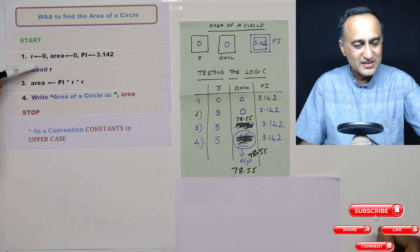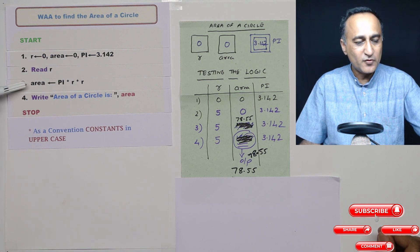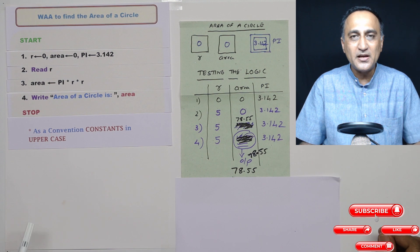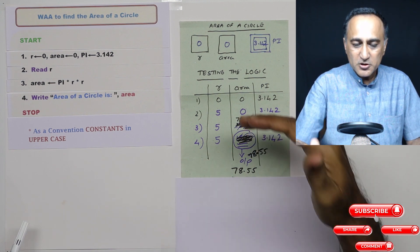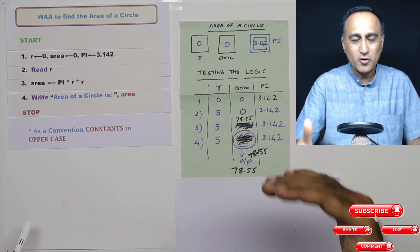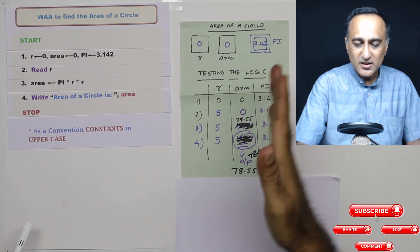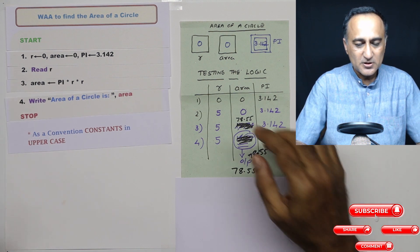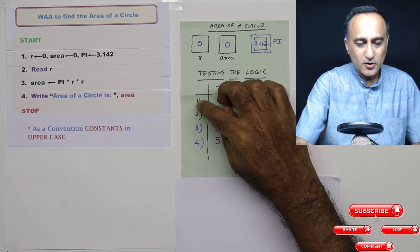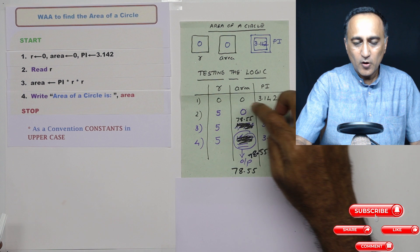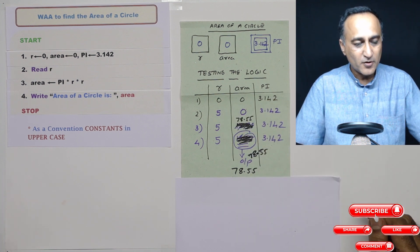Again, just to reemphasize, the sequence is very important. If you change the steps, you're going to get completely wrong results. And most importantly, to know whether your algorithm or your logic is right, prepare a table with the variables listed in the columns vertically. For each of these steps, do keep track of how the variables are changing.